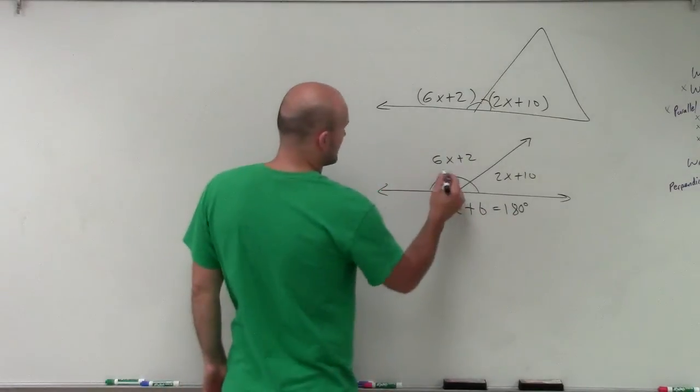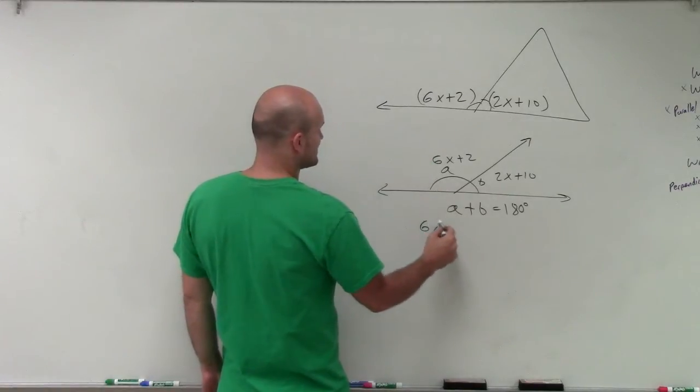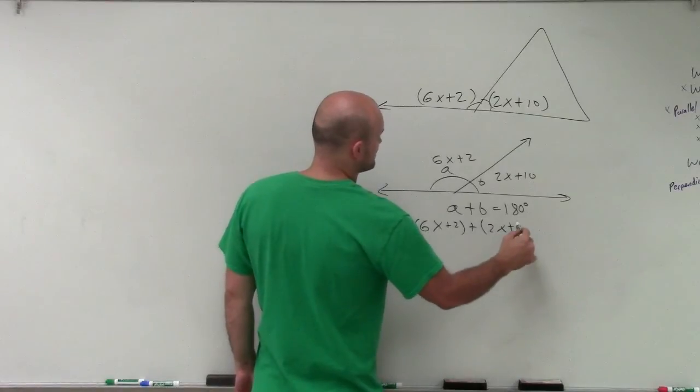So let's go ahead and write this out. I can still write my a and b. So now I can say that instead of a, I have 6x plus 2. And instead of b, I have 2x plus 10.